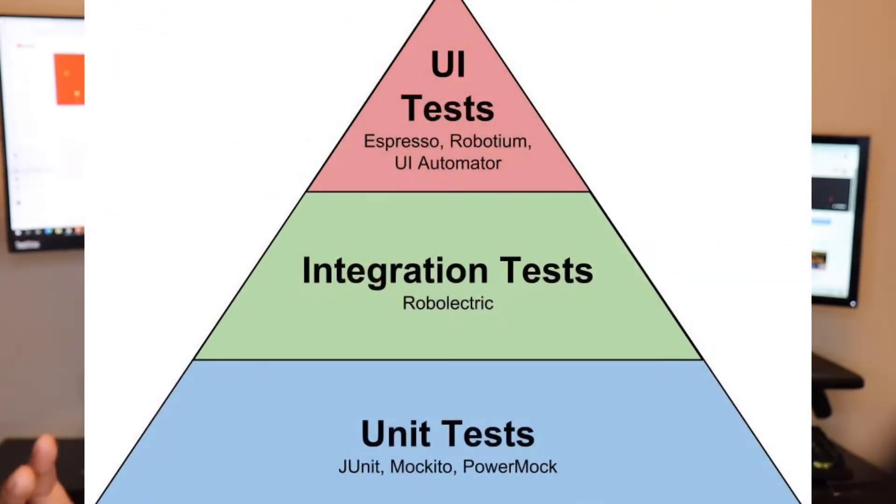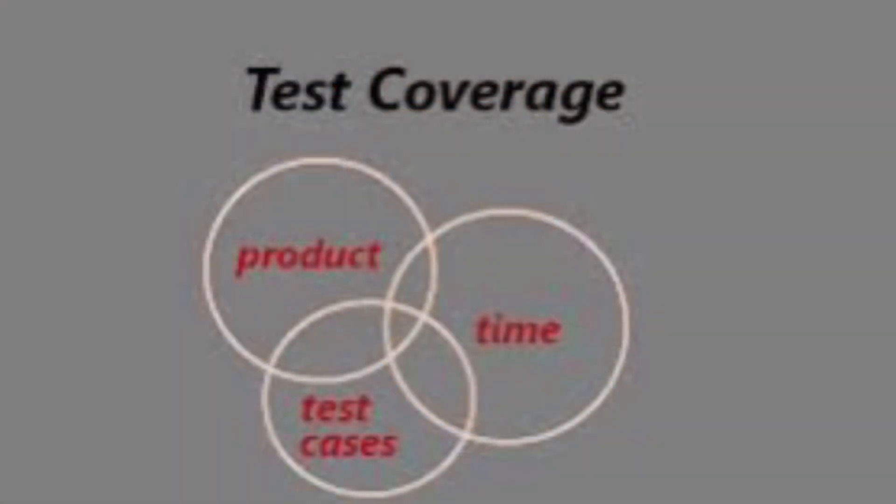Hey YouTube, this is the test lead and today's video is the testing pyramid. Software should be tested in its full capacity before being released to an end-user. An unpleasant end-user experience can destroy an application and stop a user from using it altogether. To get the best level of test coverage, different levels of testing should be performed. It is usually impossible to catch every single bug before release, but a tester's job is to limit these bugs.